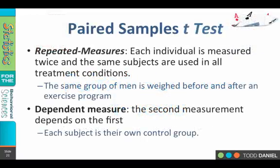There are two ways that we could create these paired samples for our t-test. One is to use repeated measures, in which each individual is measured twice. This is very common with a before-and-after setup.